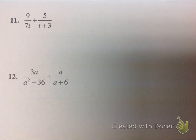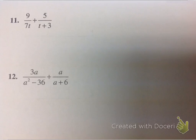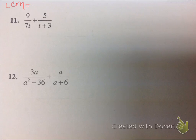Common denominators are not so hard. But what happens when the denominators are not common and we have to find them? Looking at the denominators here, I have 7t and t plus 3 — they have nothing in common. You might say they share a t, but remember we're looking for common factors. t is not a factor in t plus 3; it's being added to 3. So we need to find equivalent fractions, and the LCM is going to be 7t times (t plus 3).